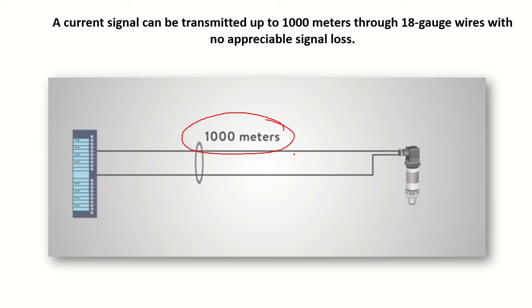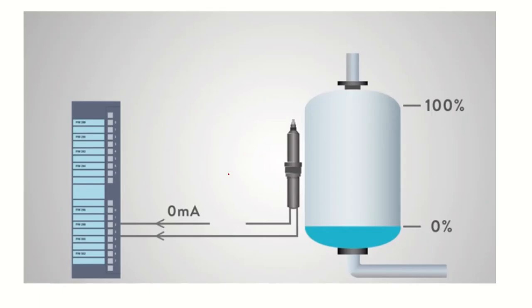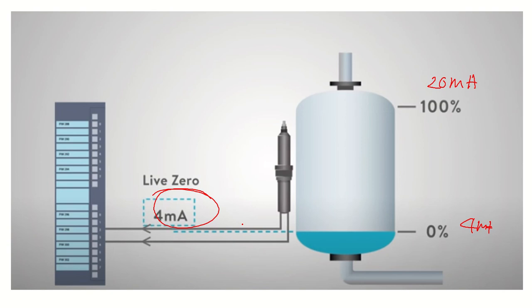Data can be transmitted through an 18-gauge wire without any appreciable loss. Another important advantage of current loops is the live zero feature. The lower range limit is 4 milliampere and the upper range is 20 milliampere. If the output gives 0 milliampere, that means there is some disconnection in the wire. Since the minimum value should be 4 milliampere, getting 0 milliampere indicates a disconnection — this feature is called the live zero feature.